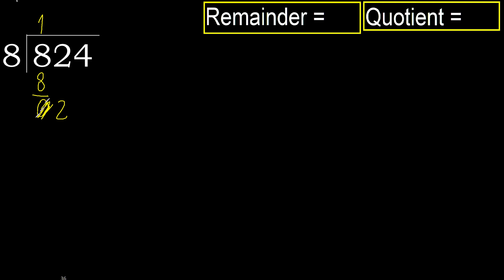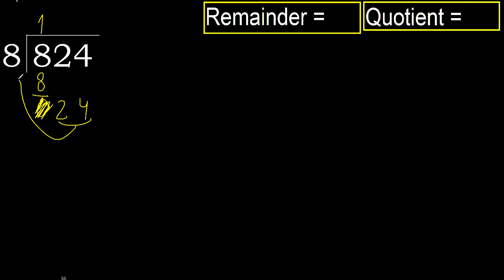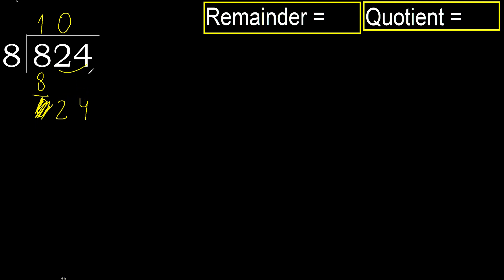Next, bring down the 2. 2 is less than 8, therefore go to the next digit. 24 is not less. There are 2 numbers, so complete with 0.